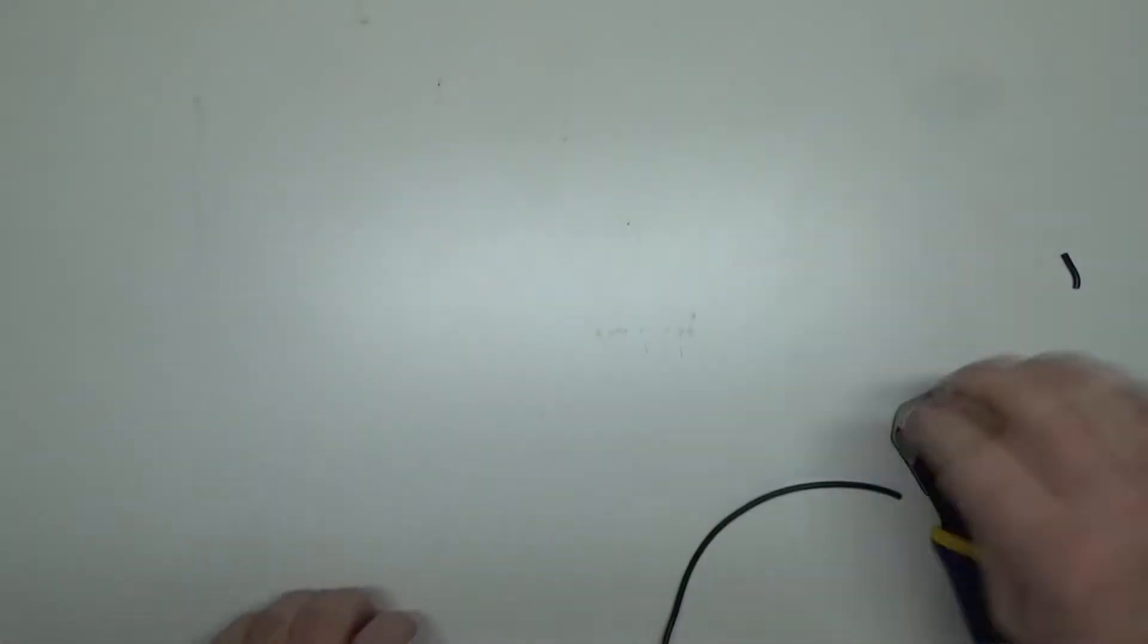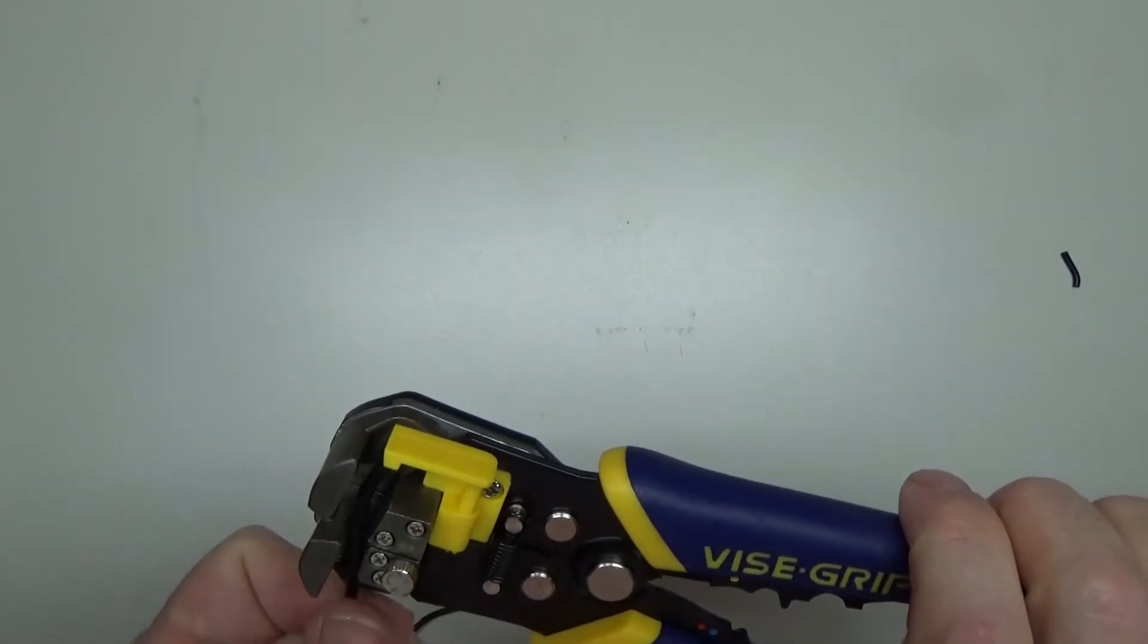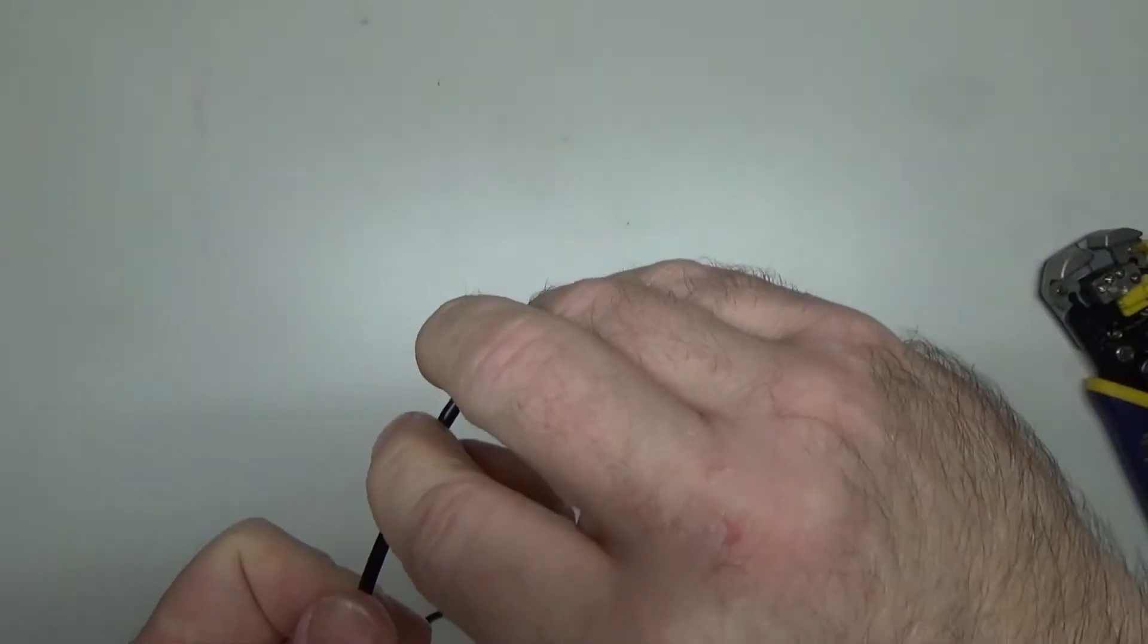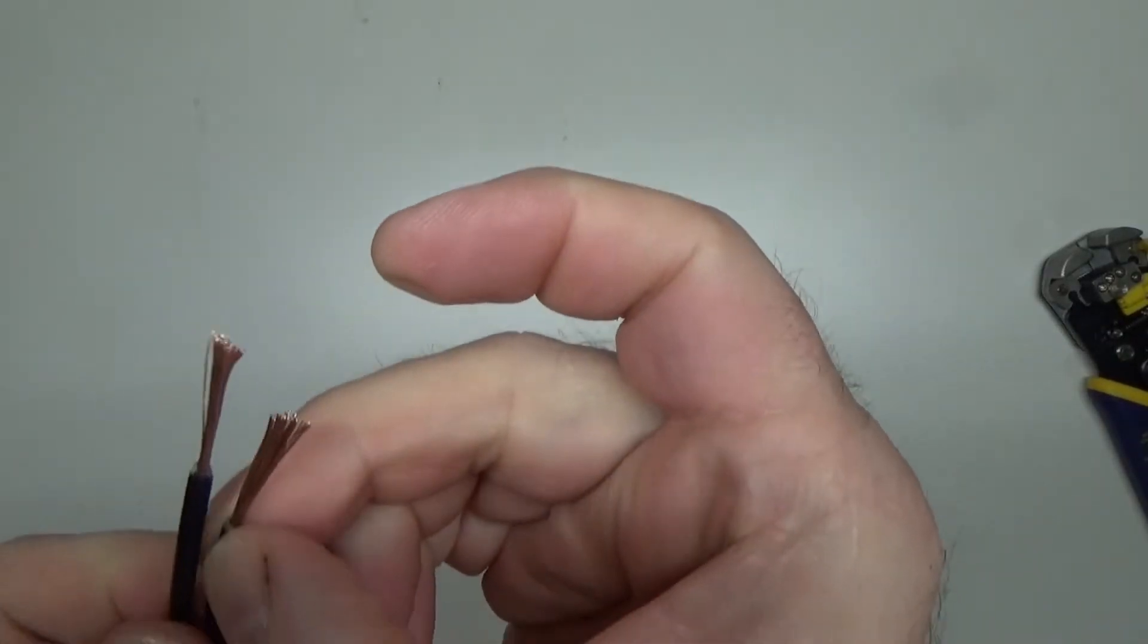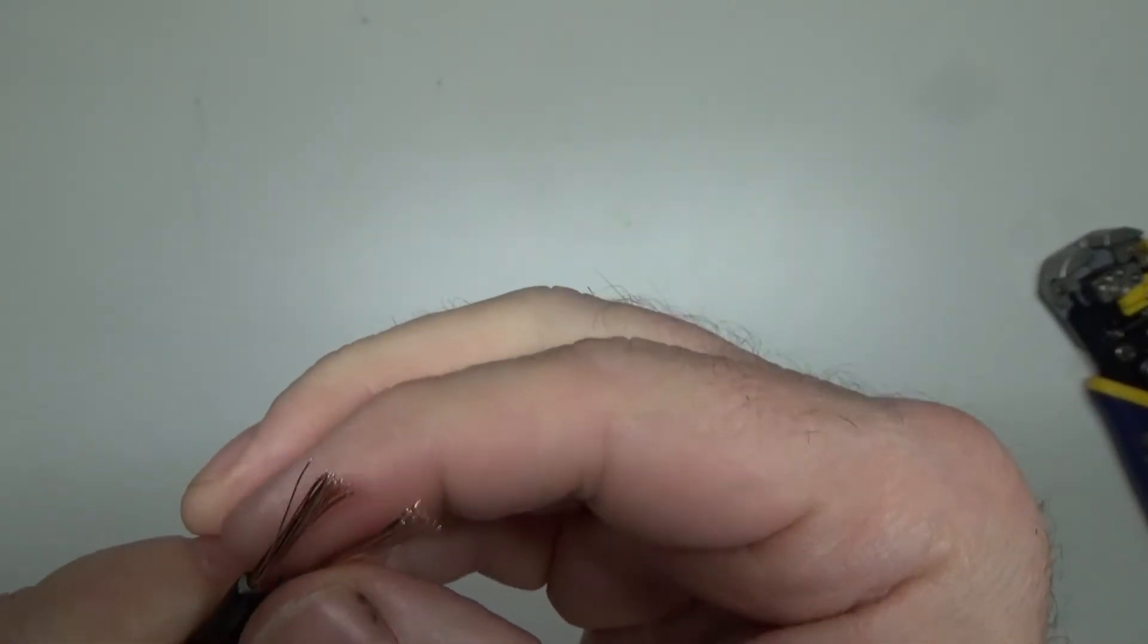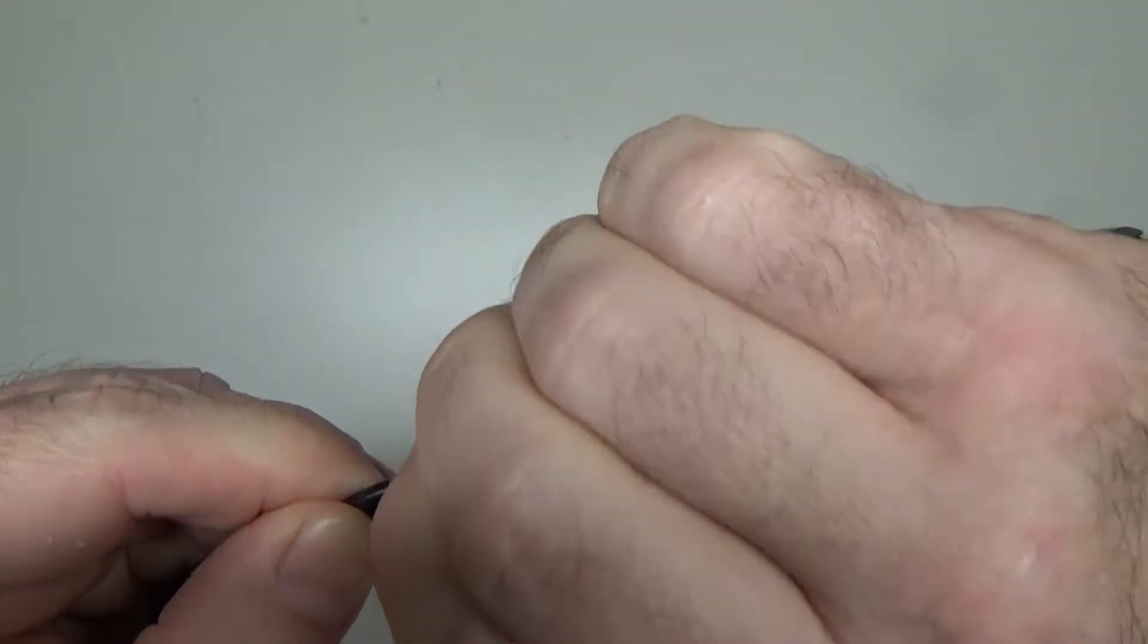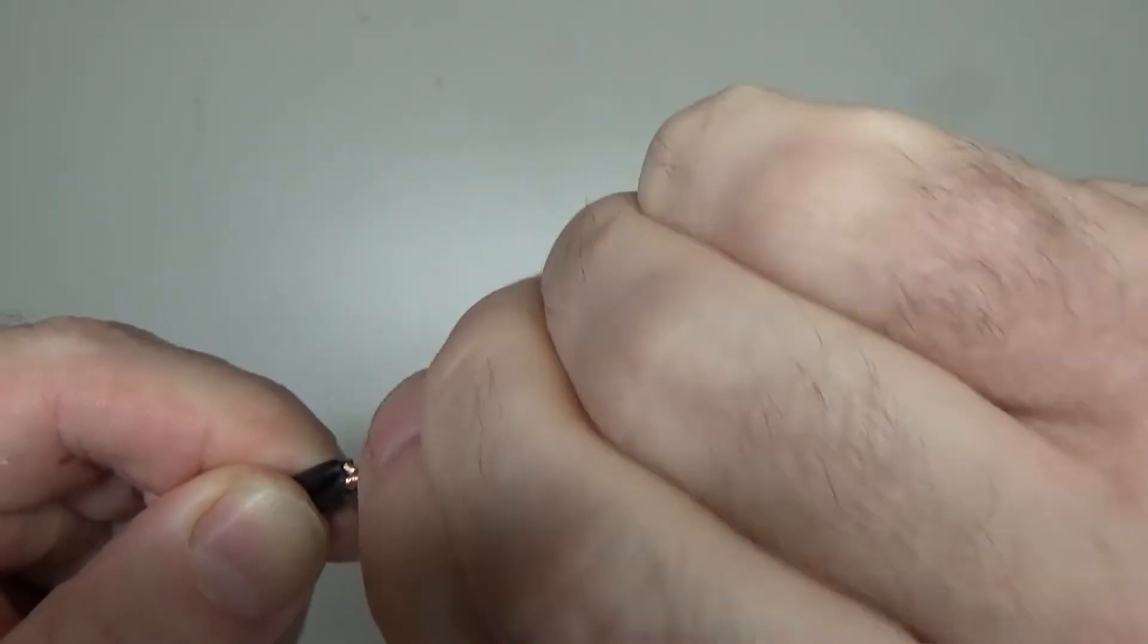Stranded means multiple strands inside versus solid strand wire, which is one big fat wire inside the insulation jacket. Now we have our two stranded wires stripped back, approximately about three-fourths of an inch or so. Get your wires side by side like that, and with a rat tail, you just simply keep twisting it, twist and twisting it like this.